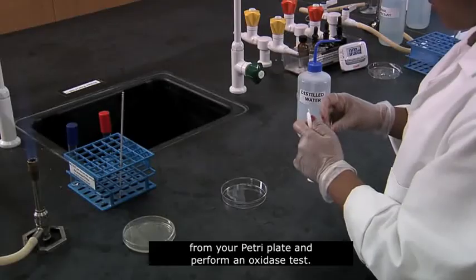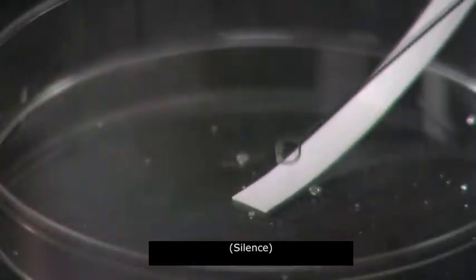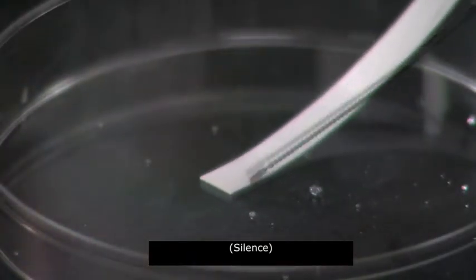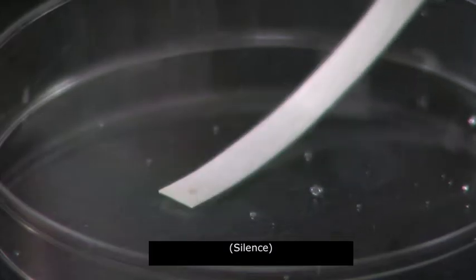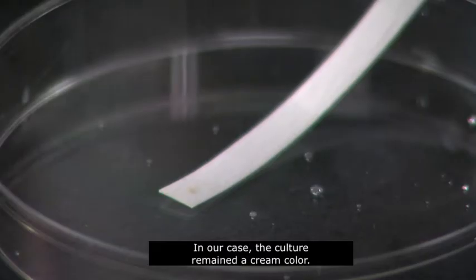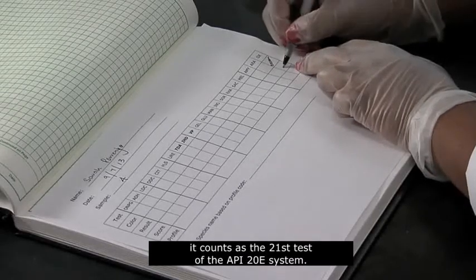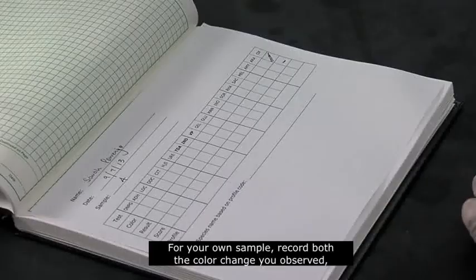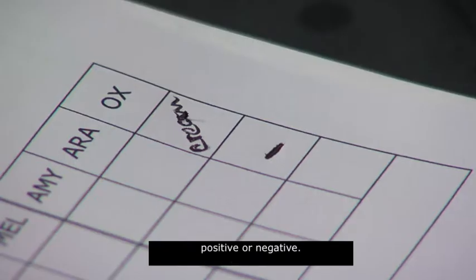During this incubation period, take another colony from your petri plate and perform an oxidase test. In our case, the culture remained a cream color. We interpret that result as negative. Although the oxidase test is not part of the strip, it counts as the 21st test of the API-20E system. For your own sample, record both the color change you observed, if any, as well as your interpretation, positive or negative.